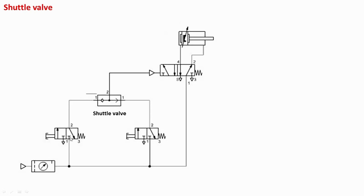This is the shuttle valve. In this shuttle valve, if you give pressure from one side the ball will move in that direction and block the opposite port. If you give high pressure air from the other side, the ball moves the other way and blocks that port. So either of the two push button operated direction control valves can be operated to get the pressure signal and operate this shuttle valve. This is a case of logic OR circuit.